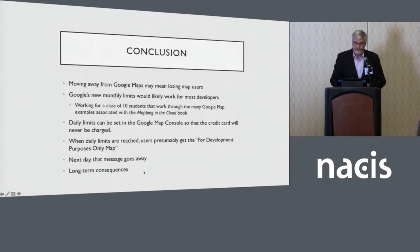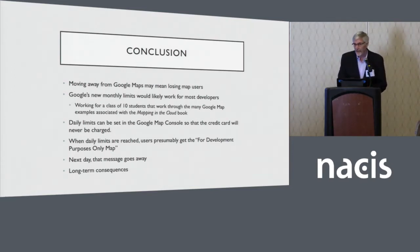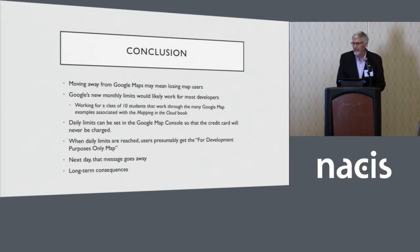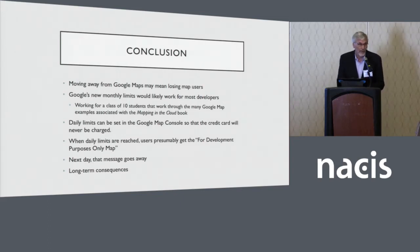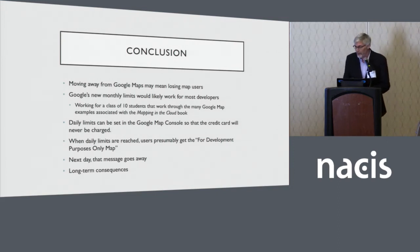The long-term consequences: I think Google is making a mistake and should try to get money other ways — perhaps charging places who want to be represented on the Google Map. Moving away from Google Maps may lose map users because people are so used to the look, colors, and feel of the Google Map and see it as the normal map. Google's new monthly limits would likely work for most developers and certainly work for a class of 10 students working through the 'Mapping in the Cloud' book examples.